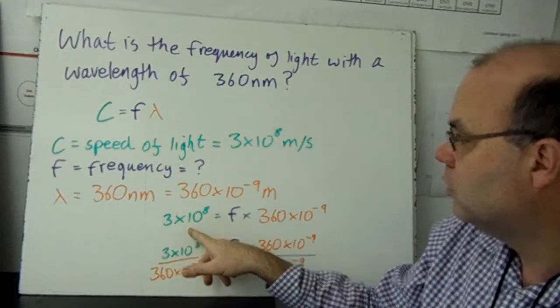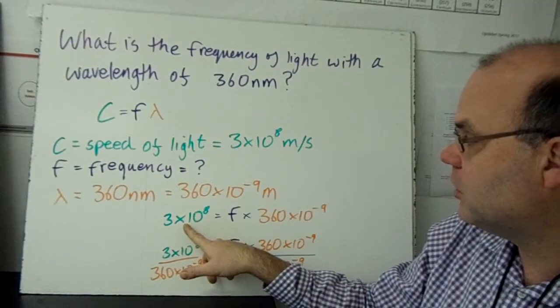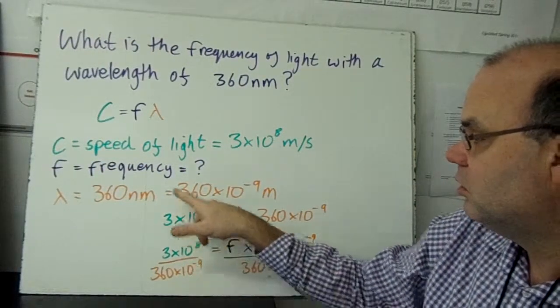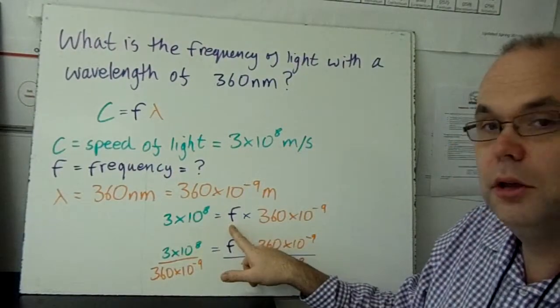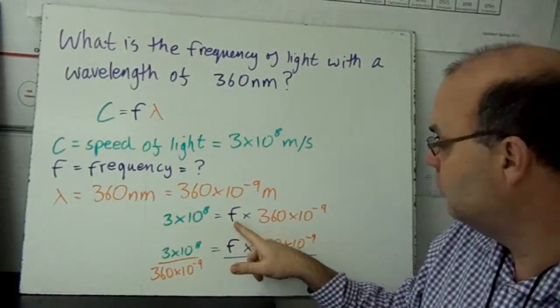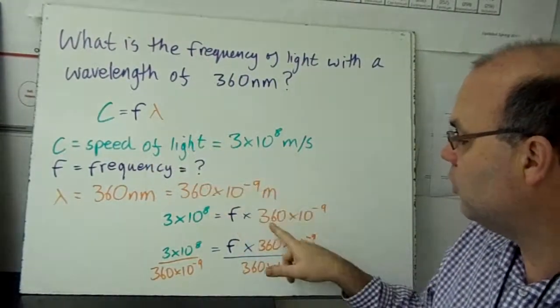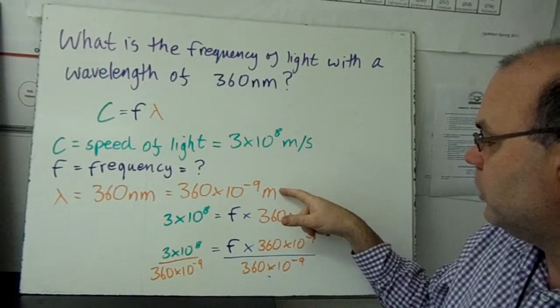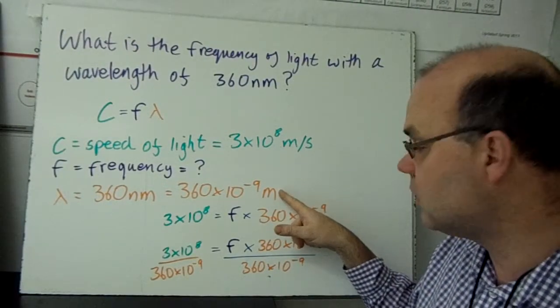So C is 3 times 10 to the 8, F we don't know so we'll call it F, and lambda, the wavelength, is 360 times 10 to the minus 9 meters.